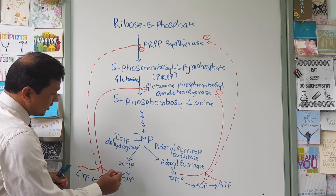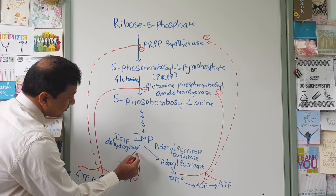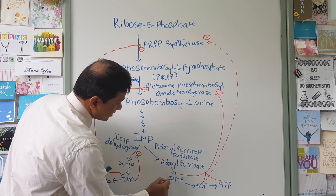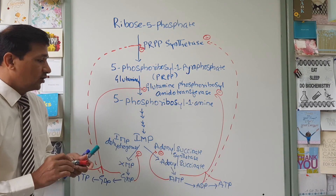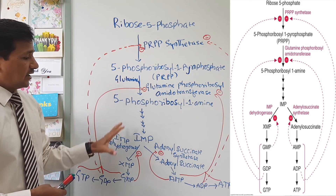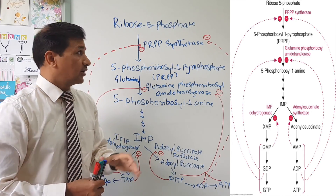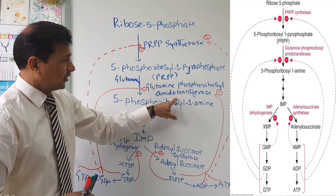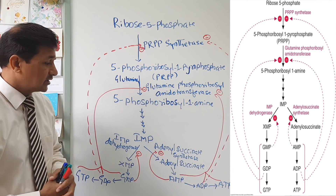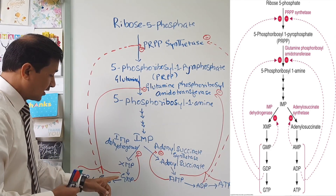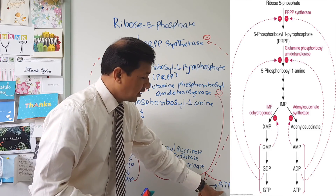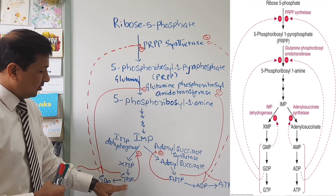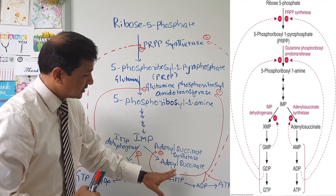IMP dehydrogenase is feedback inhibited by GMP — whenever GMP accumulates, it has an immediate negative effect on IMP dehydrogenase. Similarly, accumulation of AMP has an immediate negative effect on adenylosuccinate synthetase. In summary: PRPP synthetase is negatively modulated by GDP and ADP; glutamine phosphoribosyl amidotransferase is inhibited by all 6 molecules (GMP, GDP, GTP, AMP, ADP, ATP); IMP dehydrogenase is negatively modulated by GMP; and adenylosuccinate synthetase is negatively modulated by AMP.